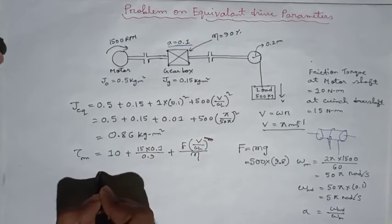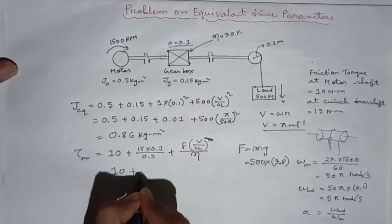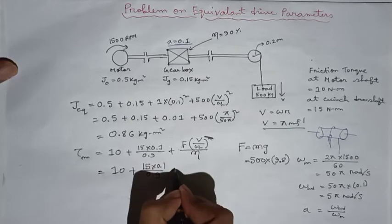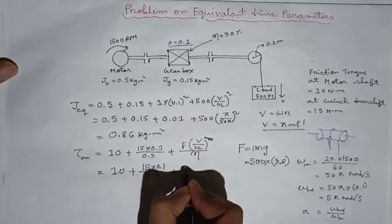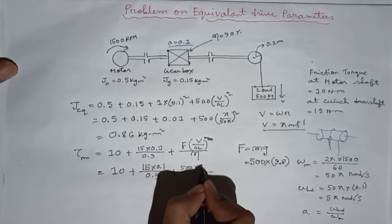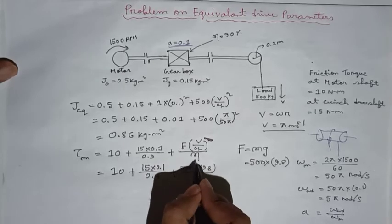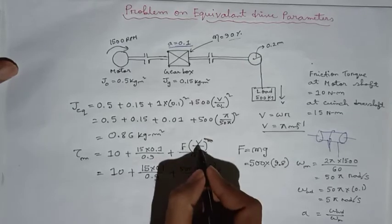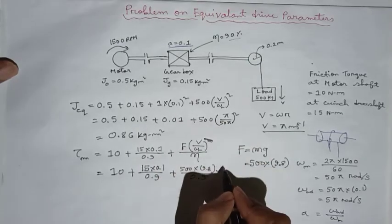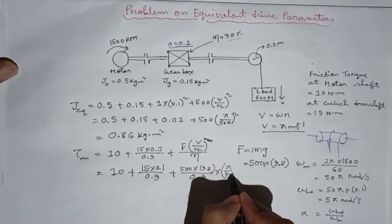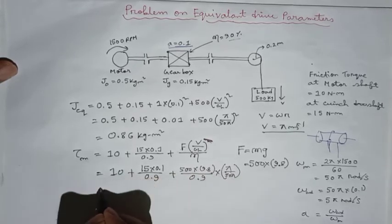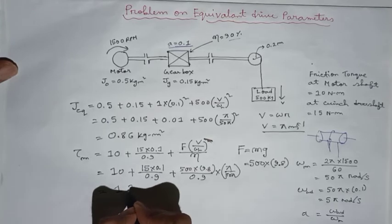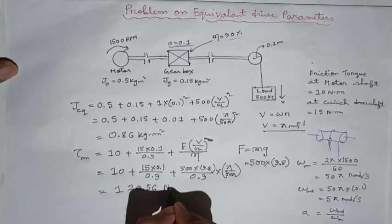Now if we substitute all this value here, we will get that 10 plus 15 into 0.1 divided by 0.9 plus force that is 500 into 9.8, efficiency which is given as 90%, 0.9, into v by omega m, that is pi by 50 pi. Now if we solve this, we will get that this will be equal to 120.56 Newton meter.